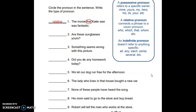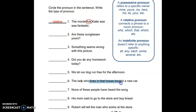Number six: 'The lady who lives in that house bought a new car.' This is a relative pronoun — the pronoun would be 'who.' It connects the phrase to a noun: 'the lady' is the noun, and 'who' connects that portion of the sentence to the rest.